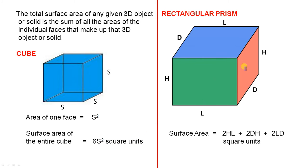For the rectangular prism, if we have a rectangular prism where this side is L, that side there is L, here we have H, and over here we have D, so we've got L there, we have H here, and we have D there.